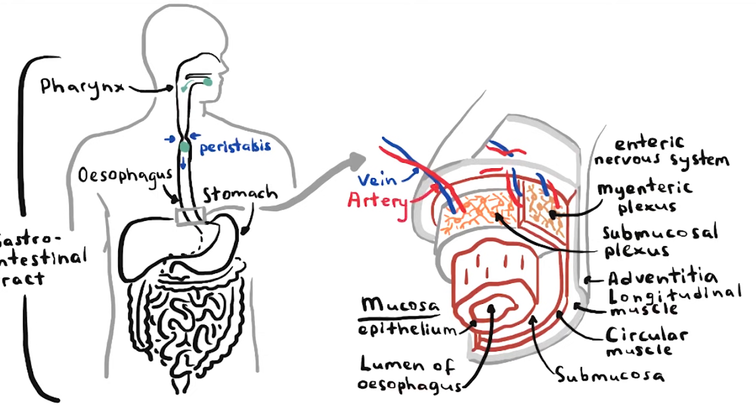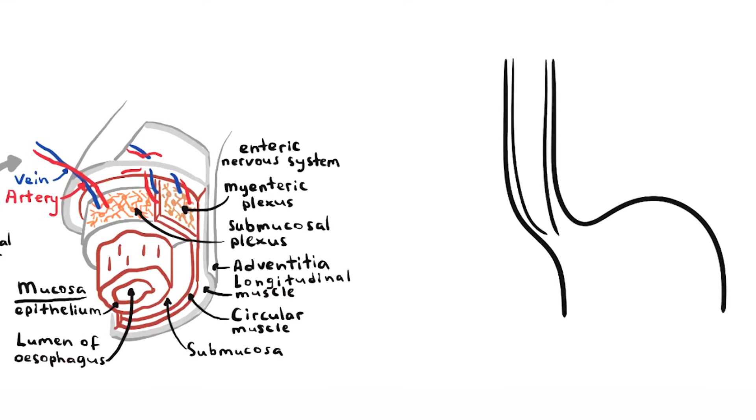There are two esophageal sphincters, an upper and lower. The lower esophageal sphincter is a muscle and its tone is controlled by the myenteric plexus.